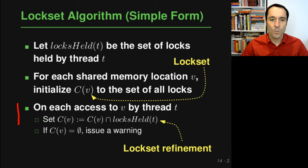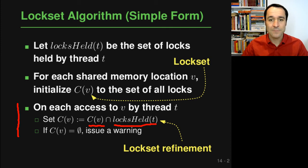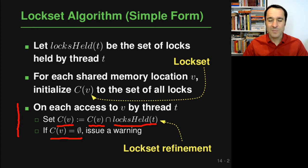While the program is executing, every access to every shared memory location is tracked, and then the lockset of that memory location is refined by taking the current lockset and intersecting it with the locks_held set of the executing thread T. So at the end we have updated the lockset to the intersection of these two sets. In case this lockset ever becomes empty — which basically means you have accessed V without the right lock — a warning is issued and the algorithm will report that there appears to be a data race.